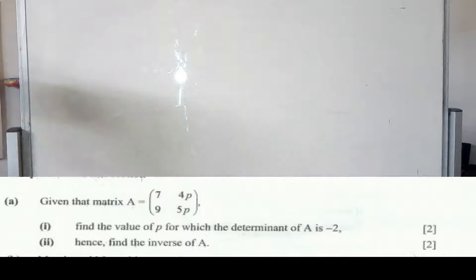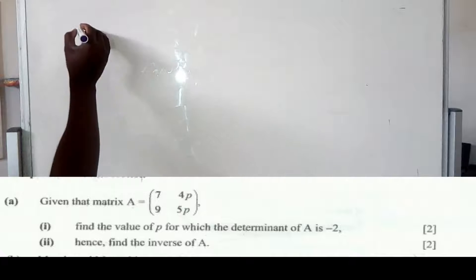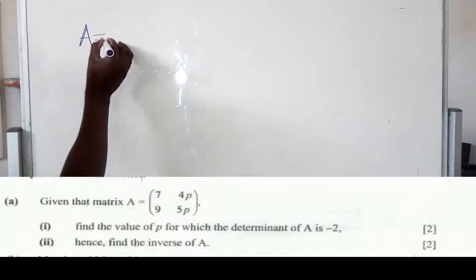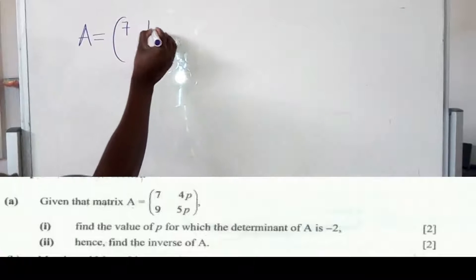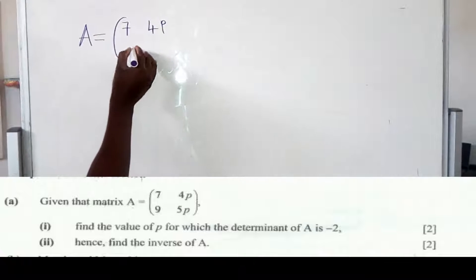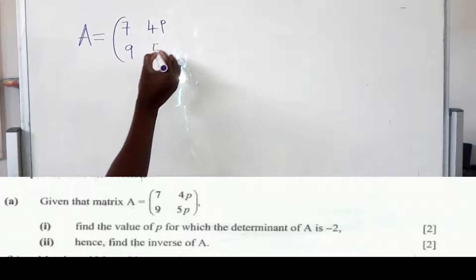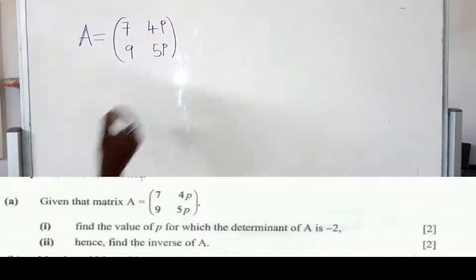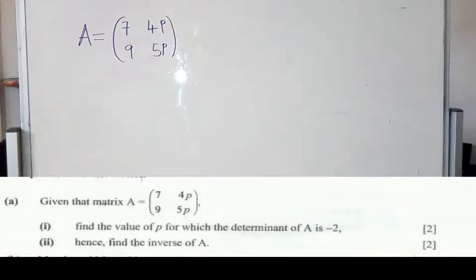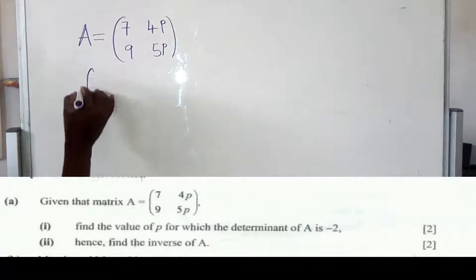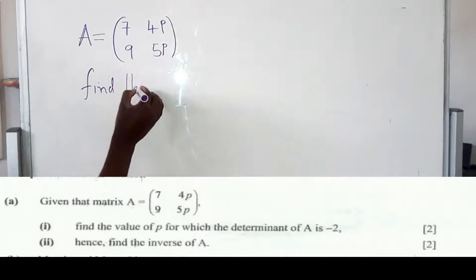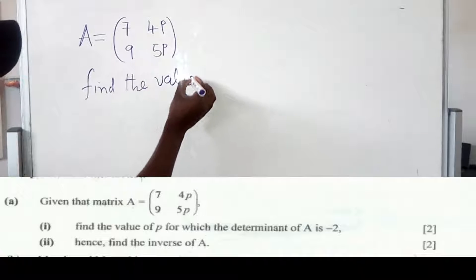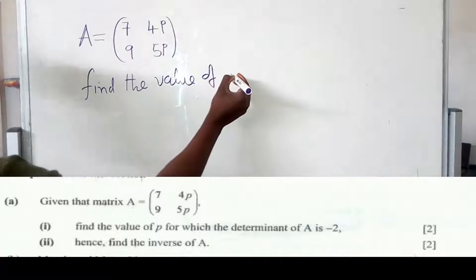Okay, since we have been given the matrix, which is A equals 7, 4P, 9, 5P. And also, there is a statement which says, find the value of P.